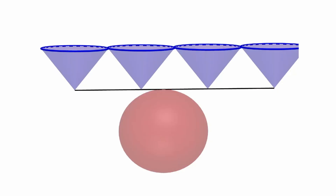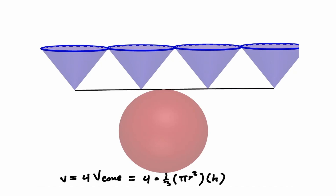So we can say that the volume is equal to four times the volume of a cone. But we know how to find the volume of a cone — that is equal to one third times the area of the base times the height of the cone.